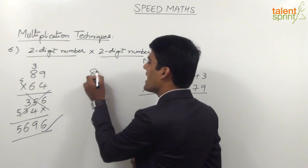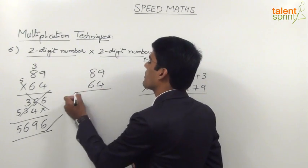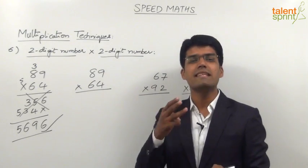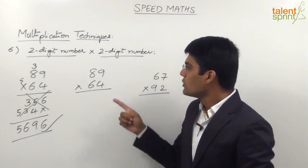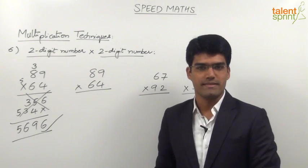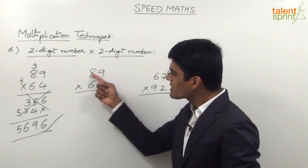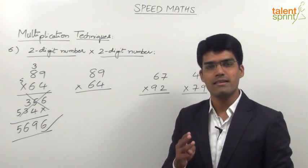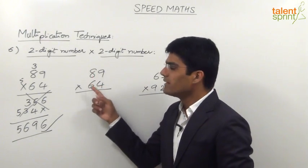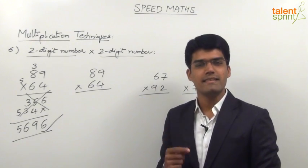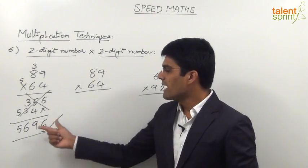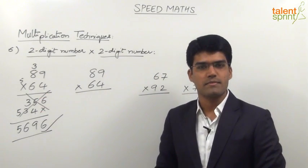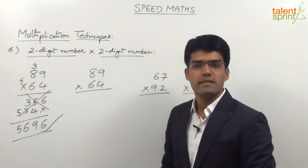The two numbers here are 89 and 64. Multiplication of these two numbers in this technique involves three steps. The first step is to multiply both the units places. The second step is cross multiplication of units places and tens places. And the third step is to multiply the tens places. In these three steps we can directly write down the answer 5696 without writing all the intermediate steps.